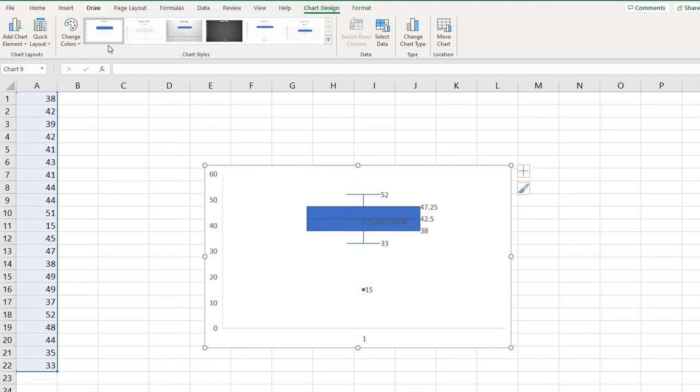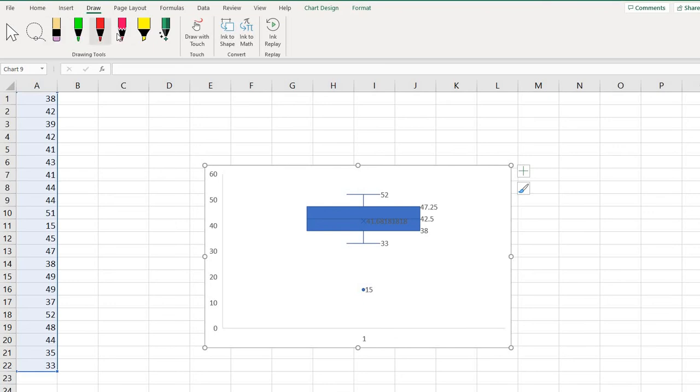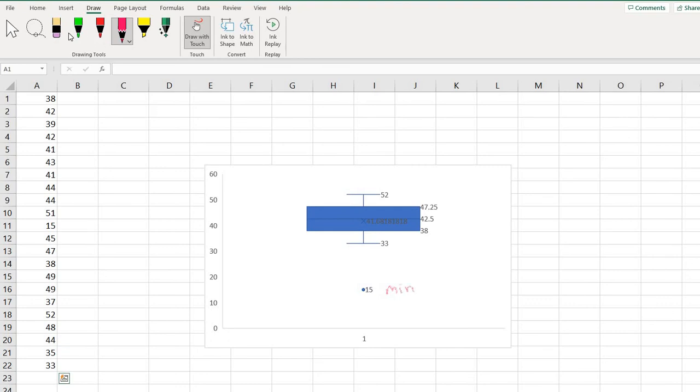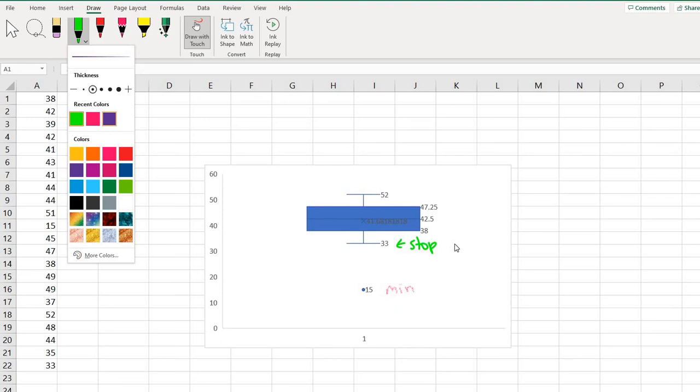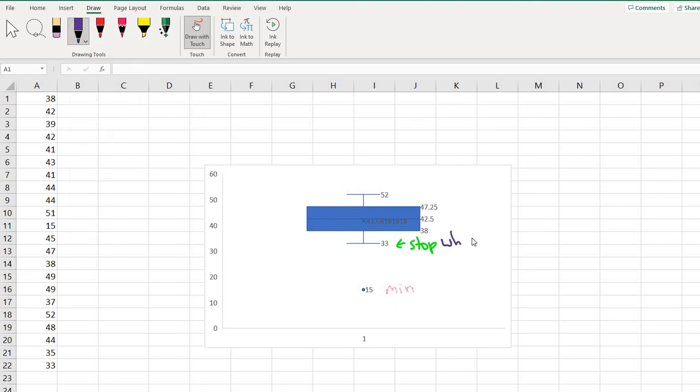Okay. On here, we do have that this would be our minimum value. This would be where we stop our whisker. And that's not a very good color. Let me pick a different color. Okay. This would be our Q1. This is our median or Q2. This is our Q3 and our maximum.